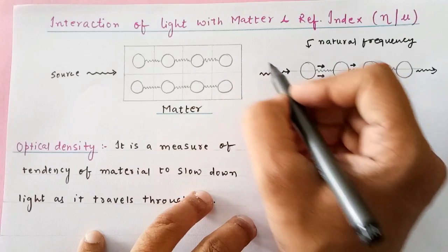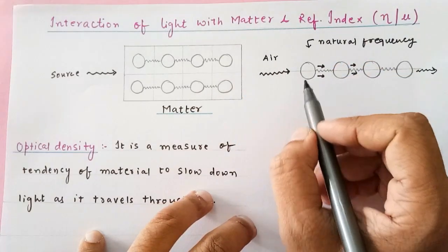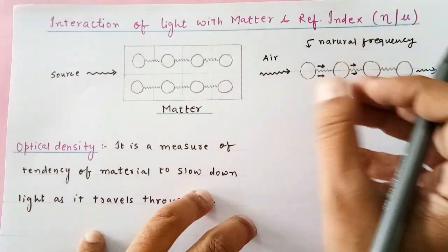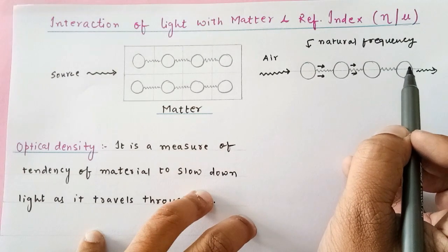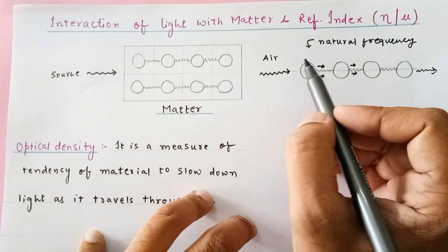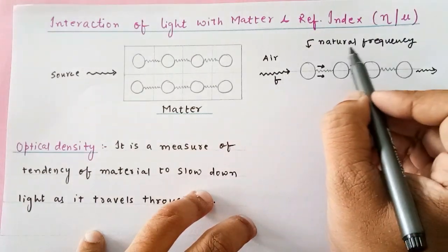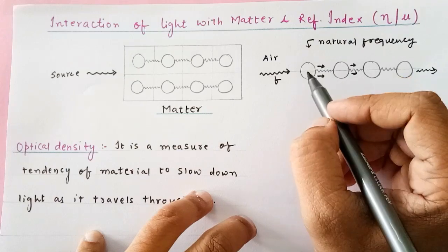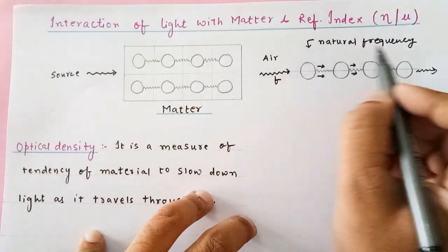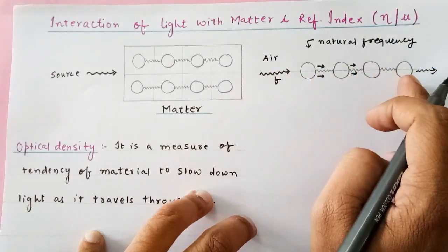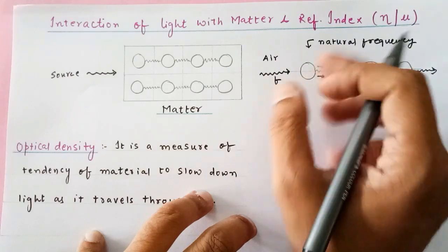So when light travels through a series of atoms — say from air into a medium like glass or water — the atoms hold the light, so the speed of light inside that particular medium decreases. This is only the case when the frequency of the light matches with the natural frequency of the atoms. If the frequencies do not match, resonant absorption does not take place, meaning the light cannot be held by these atoms for a longer period.